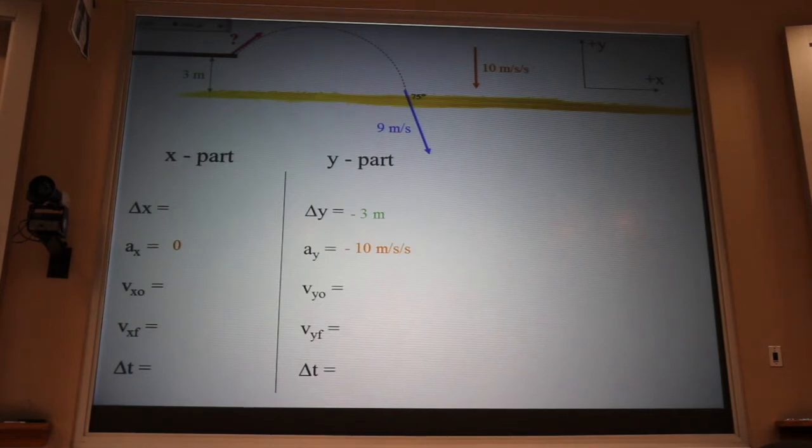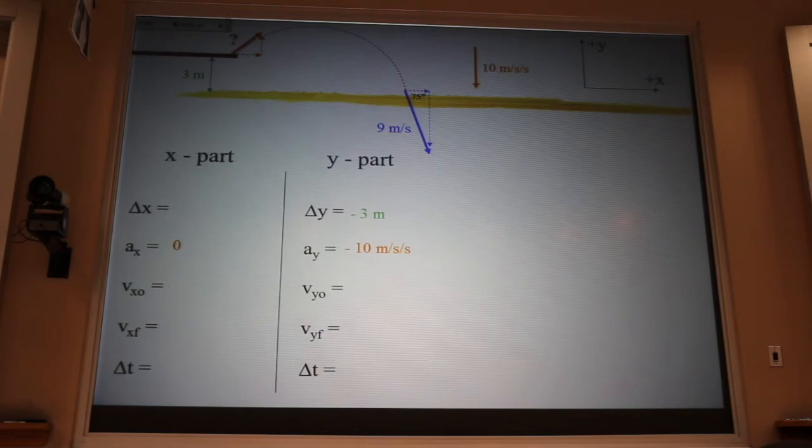Folks, what I find over and over again is that people use these equations incorrectly. These are one-dimensional equations. You can either use them for the x list, or you can use them for the y list, but you can't mix and match. And that 9 meters per second is not in the x direction, it's not in the y direction. I can't put it in any of those equations. And so I have to break that vector up into its x part and its y part.